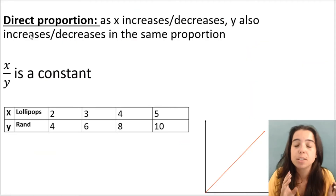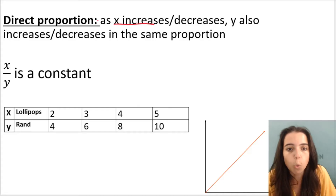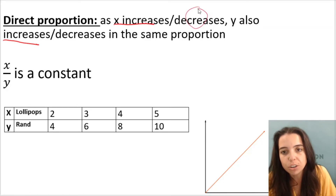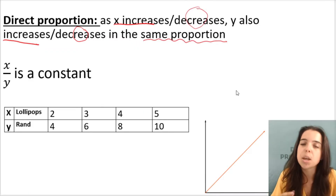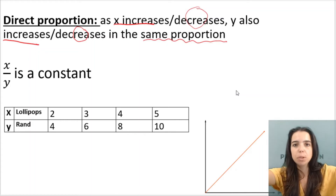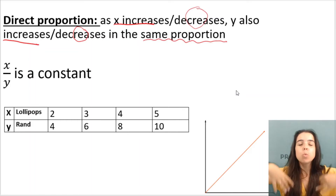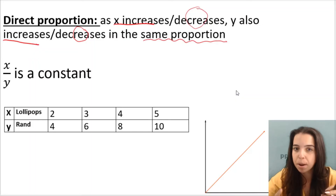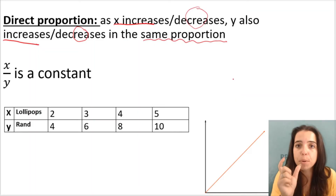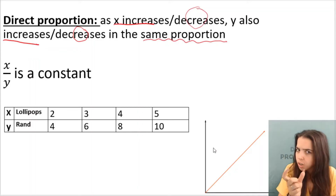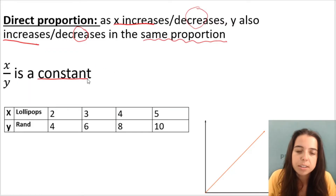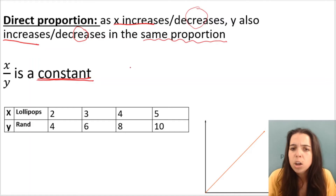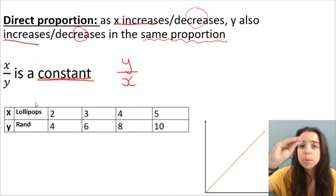Let's look at an example with numbers. Direct proportion: as x increases, y also increases, or as x decreases, y also decreases — and it's important to say in the same proportion. So what 'in the same proportion' means: if x doubles, y will double; if x triples, y will triple; if x halves, y will halve. And how do I work out the proportion? You take the one variable divided by the other variable — x divided by y is a constant. That word 'constant' means it'll stay the same. We could also do y divided by x; either way, the one variable divided by the other will be a constant.